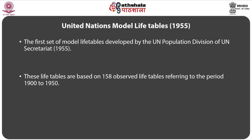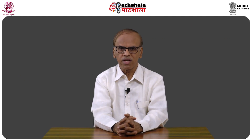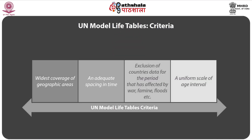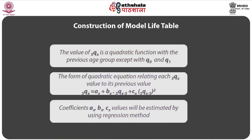UN model life tables 1955 are based on 158 observed life tables referring to the period 1900 to 1950. The selected 158 life tables are based on the following criteria: widest coverage of geographic area with adequate spacing in time; exclusion of country data for periods affected by war, famine, floods, or epidemics; and a uniform scale of age intervals. In construction, the value of 5qx — the probability of dying between ages x and x+5 — is a quadratic function of the previous age group, except for q0 and q1.